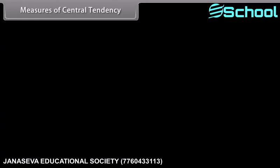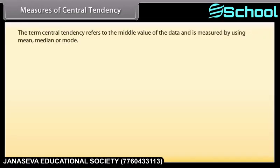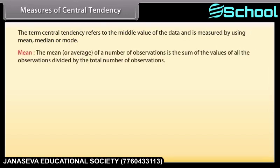The term central tendency refers to the middle value or a typical value of the data, and is measured using mean, median, or mode. The mean, or average, of a number of observations is the sum of the values of all the observations divided by the total number of observations. It is denoted by x̄, read as 'x bar'.